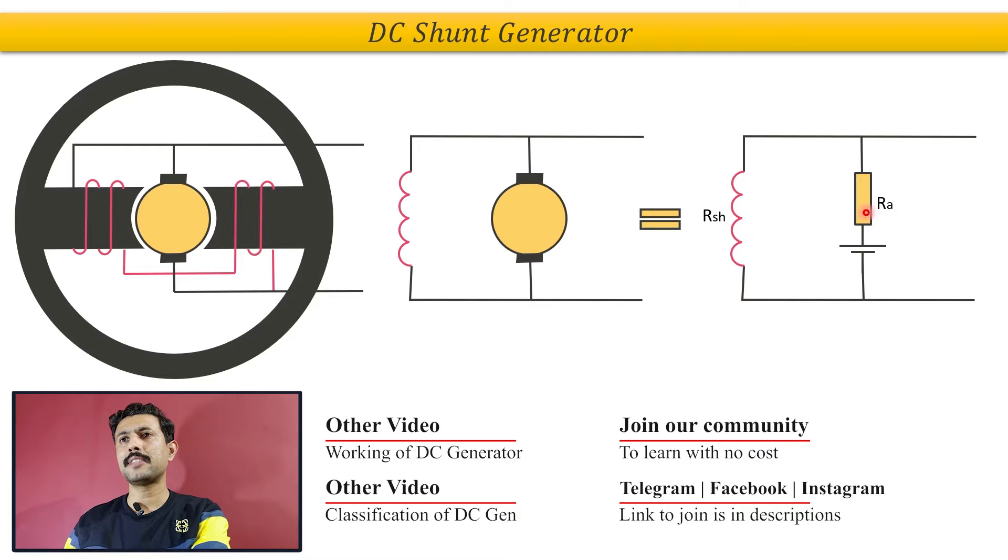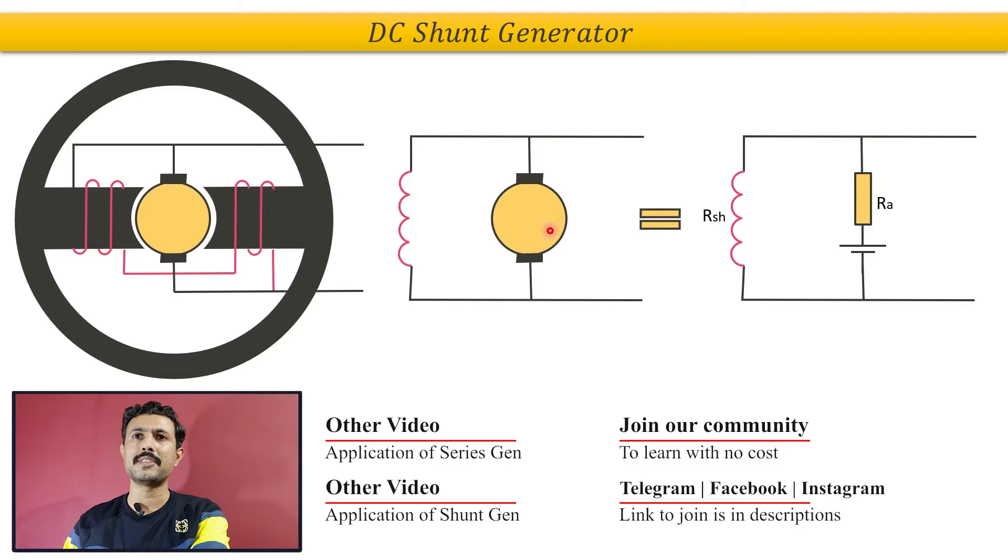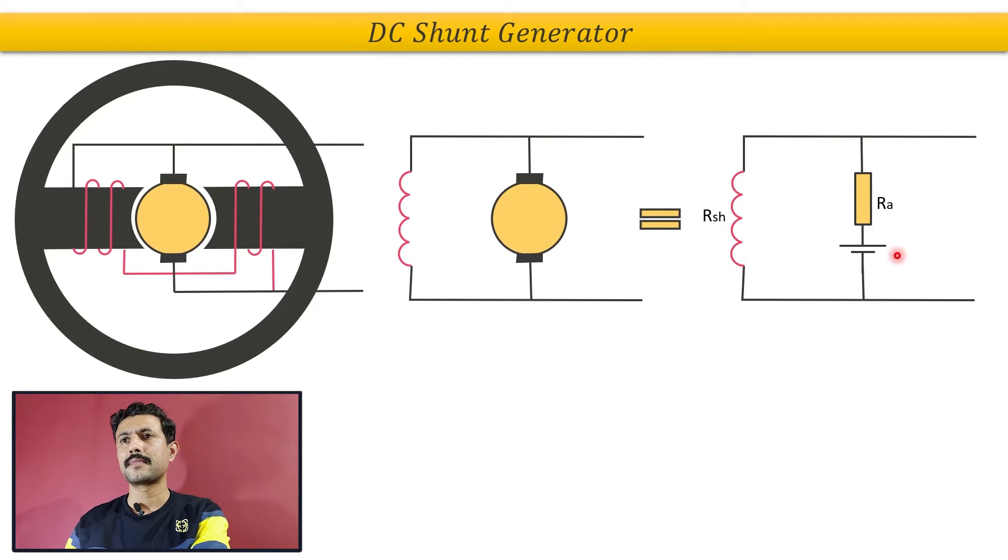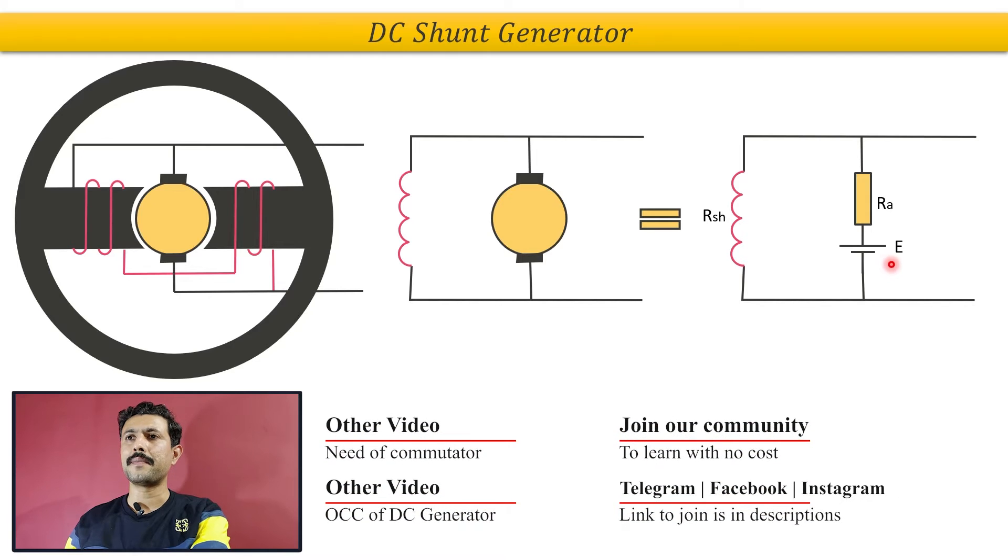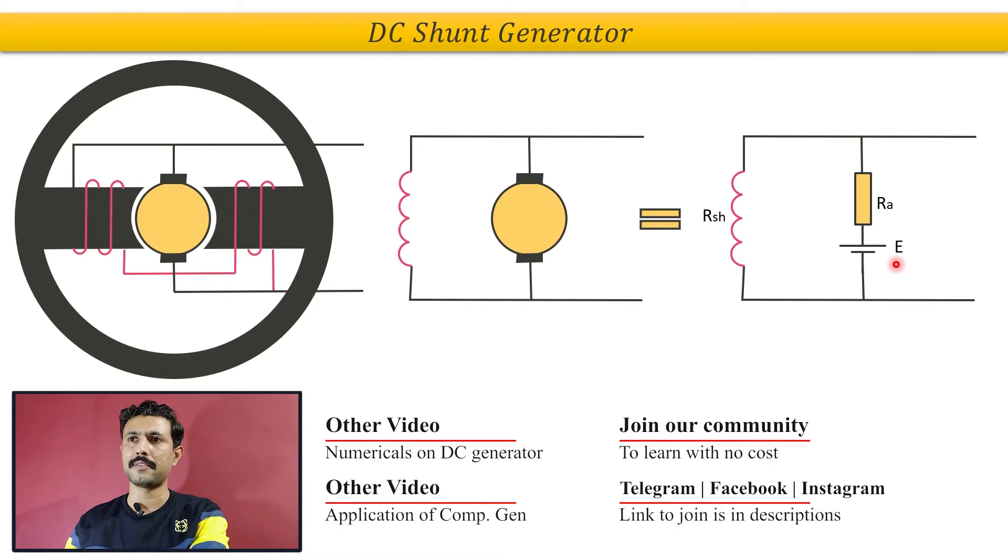Then we have this RA. RA is basically the resistance of armature winding that has been placed in this armature. This is a battery and the voltage of this battery is represented by E, which is basically induced EMF.